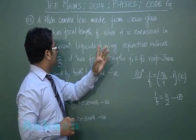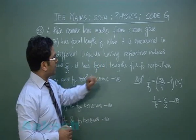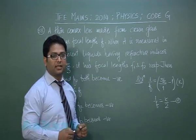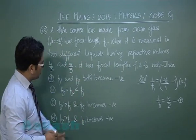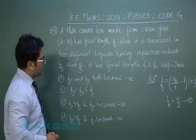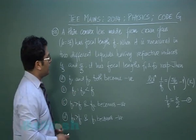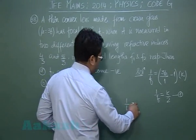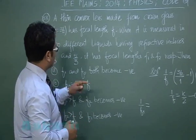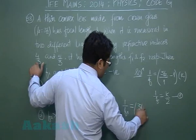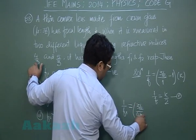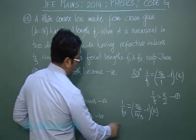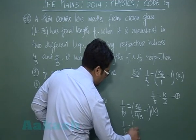When the lens is measured in two different liquids with refractive indices 4/3 and 5/3, it has focal lengths f1 and f2 respectively. For f1: 1/f1 = (μ_lens/μ_medium − 1) × k with μ_medium = 4/3. For f2: 1/f2 = (3/2 divided by 5/3 − 1) × k with μ_medium = 5/3.